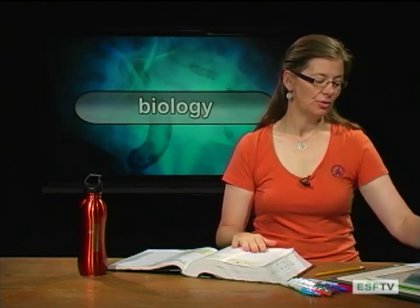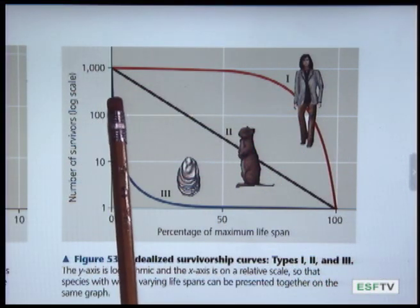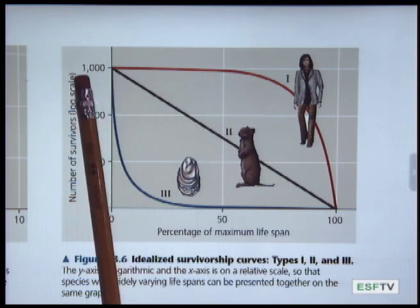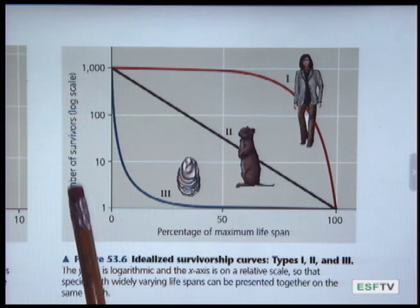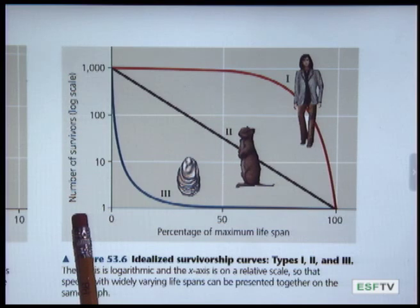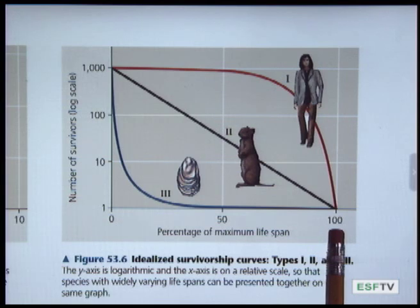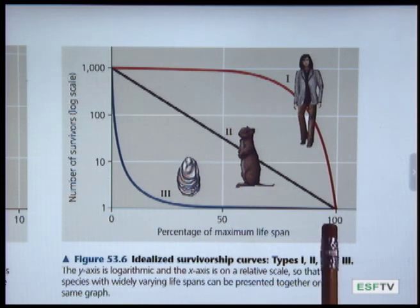Let's go to the textbook and look at some idealized survivorship curves. Looking at this graphic, along the y-axis you have number of survivors on a logarithmic scale, and on the x-axis you have percentage of maximum lifespan, varying from 0 to 100. This represents the number of individuals that survive past each point, and at 100% all individuals will have perished.